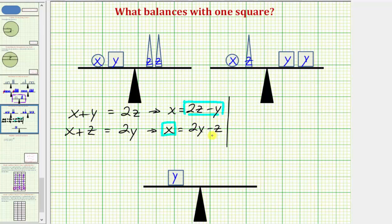So after performing this substitution, we'd have the equation 2z minus y equals 2y minus z. And now let's get the z terms on one side of the equation, and the y terms on the other. So let's go ahead and add y to both sides of the equation, and let's also add z to both sides of the equation.